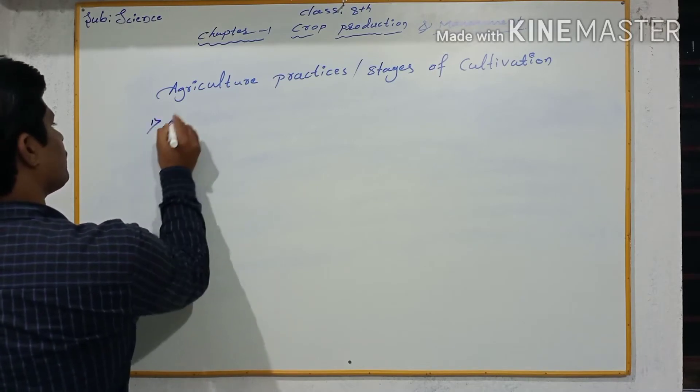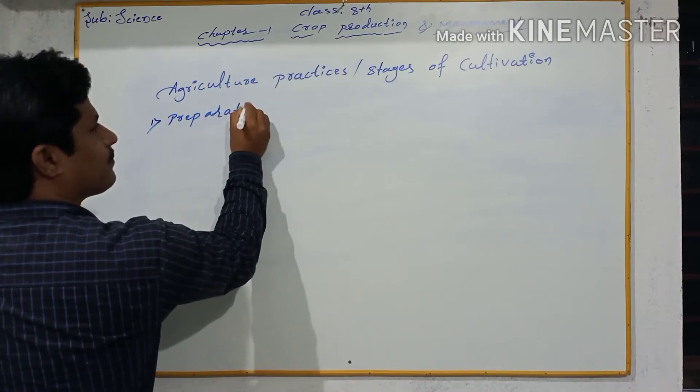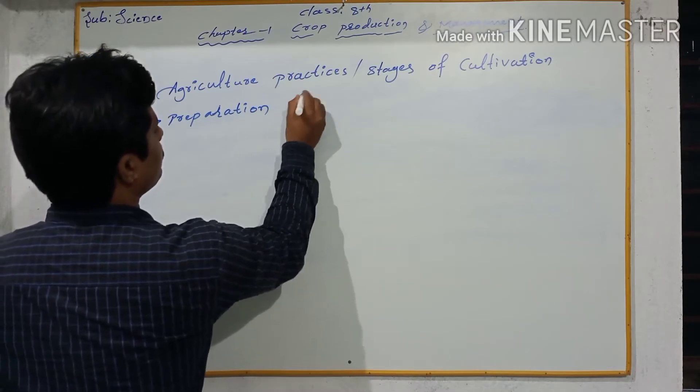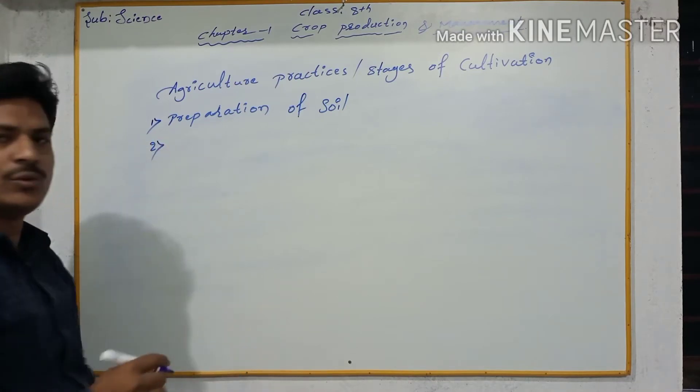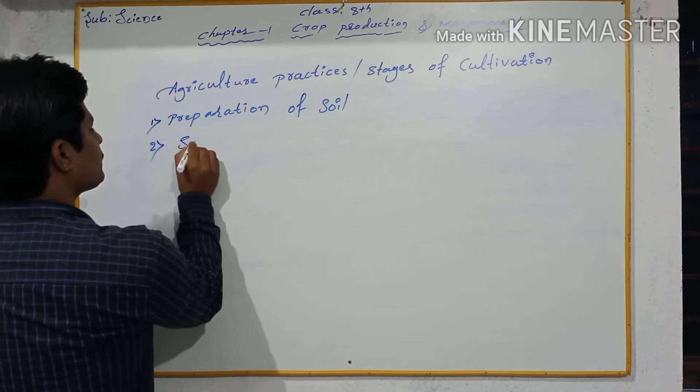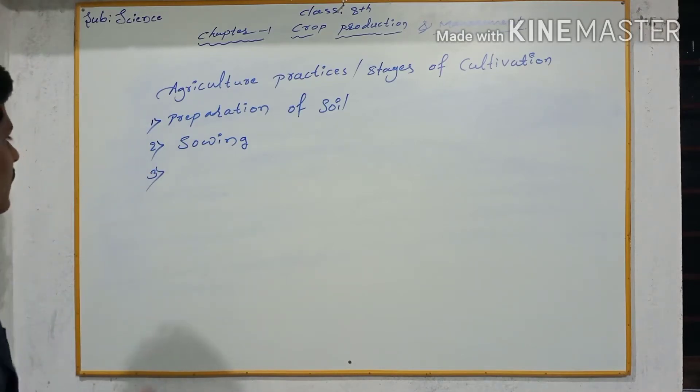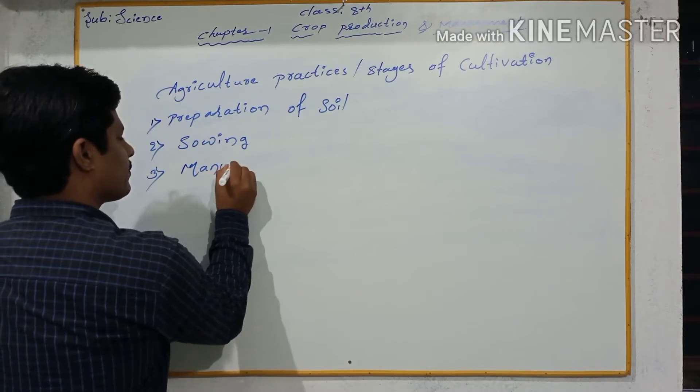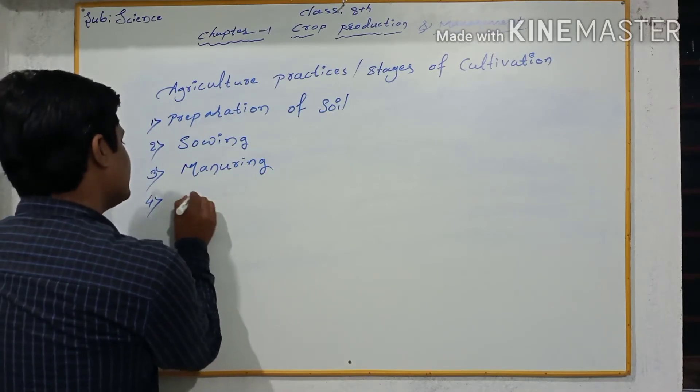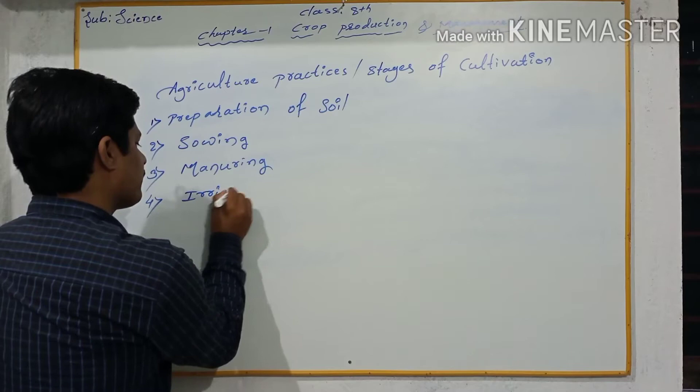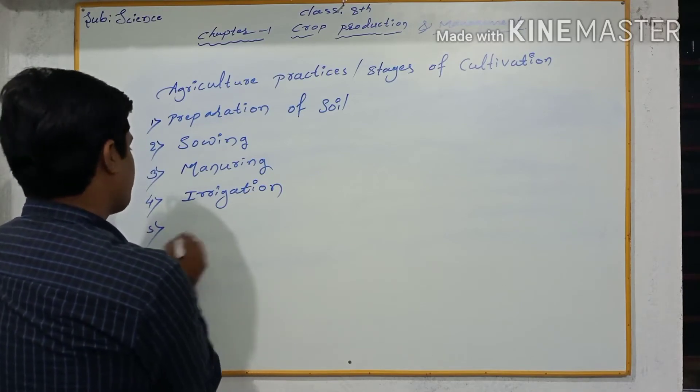Number one, preparation of soil. Number two, sowing. Number three, manuring. Number four, irrigation. And last one, harvesting.